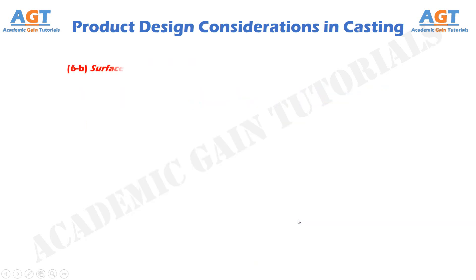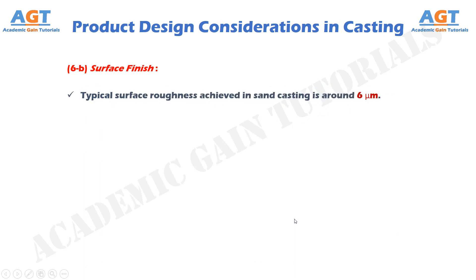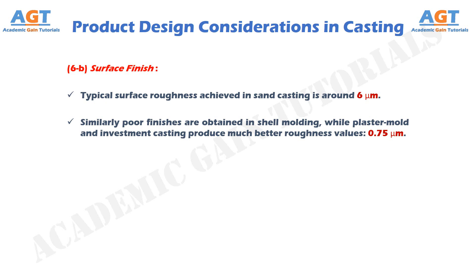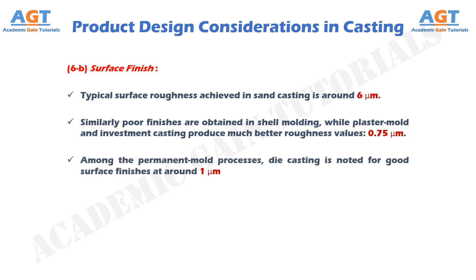After dimensional tolerance comes surface finish. Typical surface roughness achieved in sand casting is around 6 micrometers. Poor finishes are obtained in shell molding, while plaster mold and investment casting produce much better roughness values of about 0.75 micrometers. Among permanent mold processes, die casting is noted for good surface finishes at around 1 micrometer.